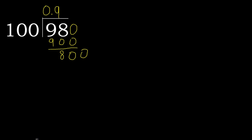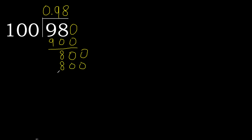Always complete with 0. Point is here — 0 point. 800. 100 multiplied by 8 is 800. 800 subtract — 0, 0. Therefore, finish.